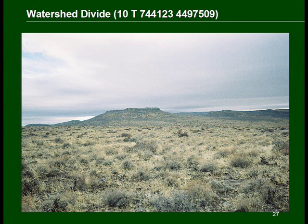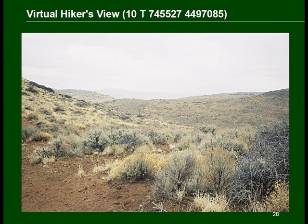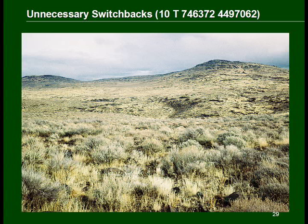At about 5,100 feet elevation in the area of the watershed divide, the Stony Creek and Rush Creek drainages are divided. Along this crest you can see both where you have come from and where you are going. The virtual hiker's view is where the virtual hiker made a seemingly unnecessary hike above 5,400 feet, but the extra effort pays off, revealing a nice view of the unnamed draw on the other side of the hill. These unnecessary switchbacks are an artifact of the Stepwise Arc Hiker algorithm, and are safely cut in mild terrain such as this, so proceeding down to Rush Creek Spring is a good idea.